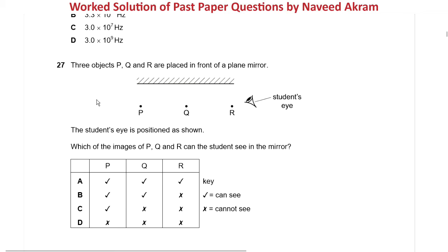Pause this video and try to solve this question. The images of the objects will be equidistant from the mirror — meaning the image of P will be here, the image of Q will be here. Let's call them P-dash, Q-dash, and R-dash. Now we draw rays from these images to the student's eye, using a ruler.